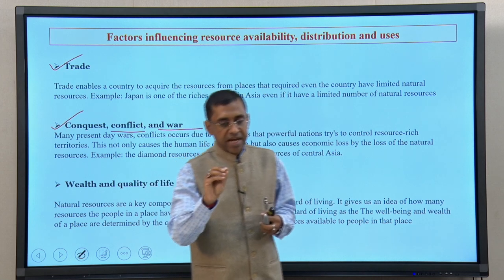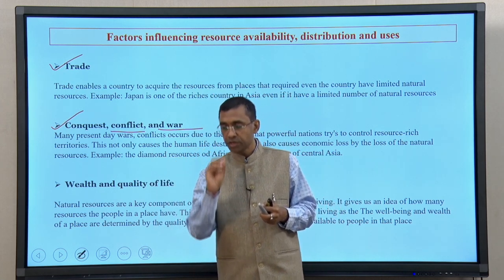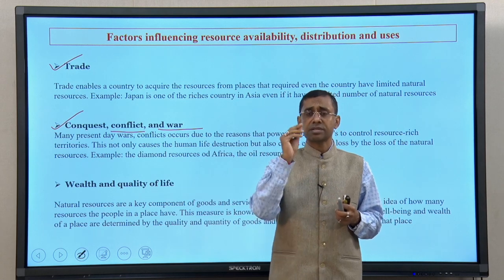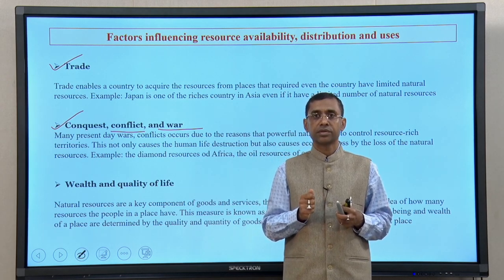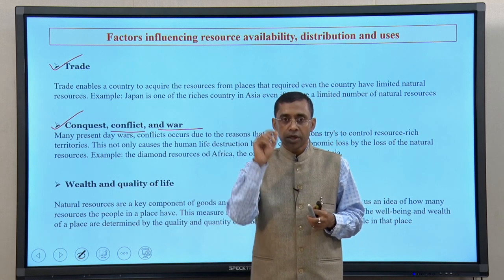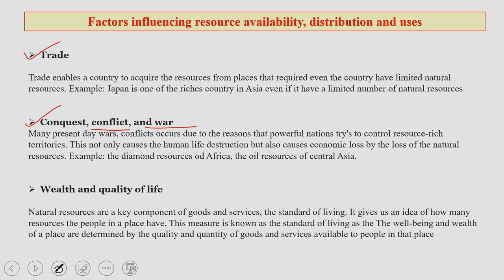On that basis, two neighboring countries started killing each other. What I am trying to say is that natural resources can be so important because they are the basis of human civilization, survival, and sustainable livelihood. If one country does not have an appropriate amount of natural resources and a neighboring country does, then a country that is rich in resources is also expected to be rich in trade, businesses, and finance.